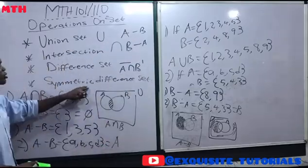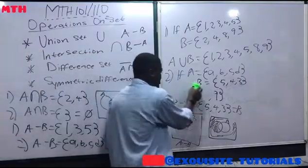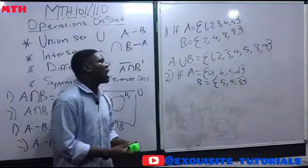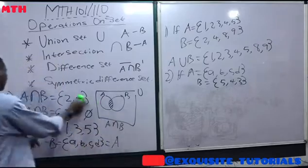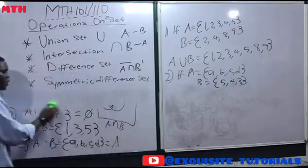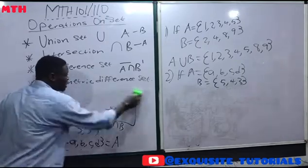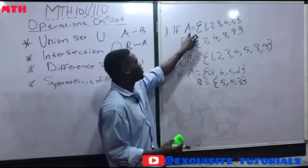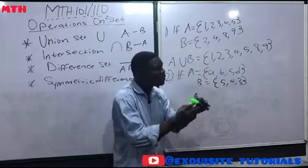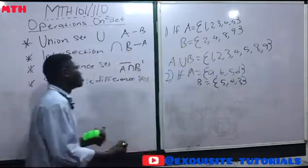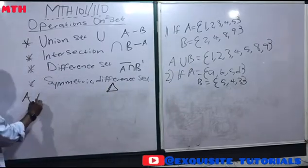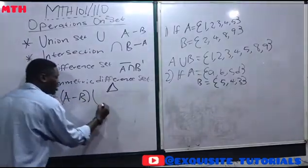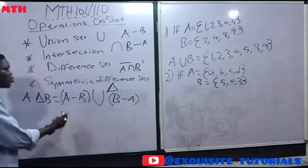Lastly, let's talk about the symmetric difference between two sets. The symmetric difference of sets A and B are those elements that are in A but not in B, combined with those elements that are in B but not in A. It is denoted by a triangle symbol (△). So A △ B means the difference A − B, plus the difference B − A — the elements unique to each set. This is what we call the symmetric difference.